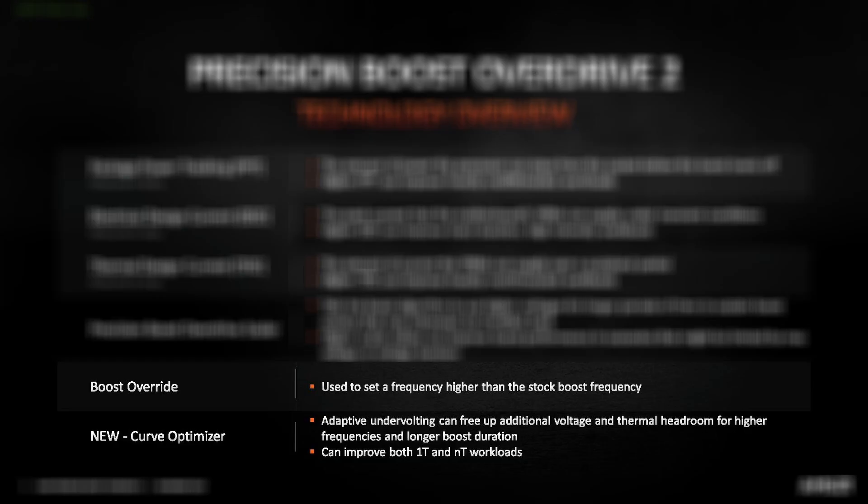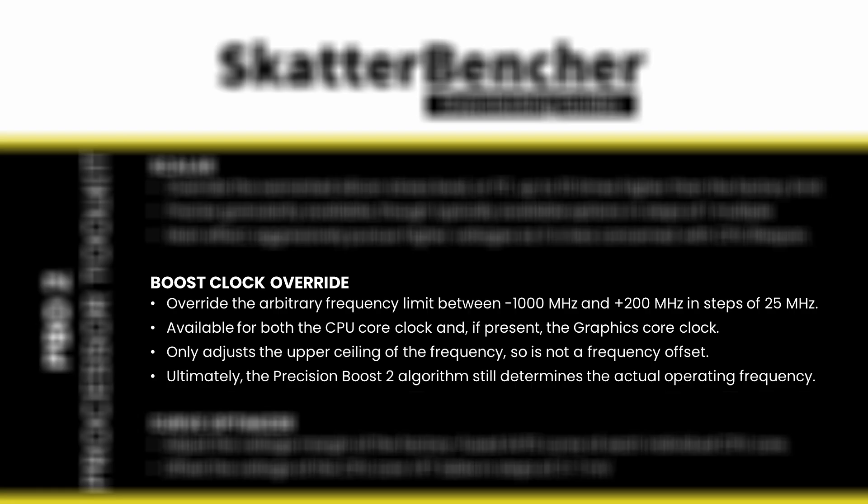To keep it as simple as possible, Boost Clock Override, or FMAX Override, allows the user to override the factory programmed CPU core clock frequency limit between minus 1000 MHz and plus 200 MHz in steps of 25 MHz. For the Ryzen 9 7950X, the programmed maximum frequency is 5850 MHz. It is important to note that the override only adjusts the upper ceiling of the frequency and does not function as a frequency offset. Ultimately, the Precision Boost 2 algorithm still determines the actual operating frequency.